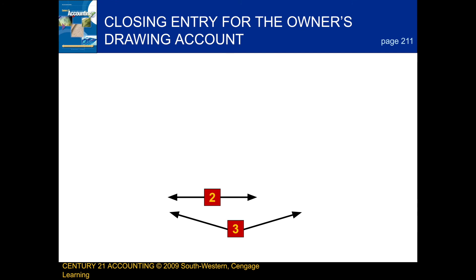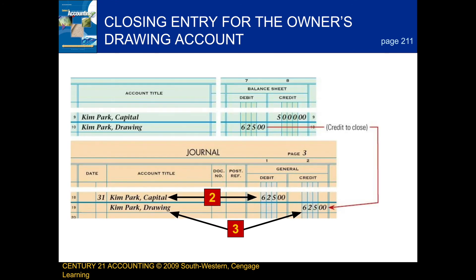The last thing we're going to be talking about in this lesson is the closing entry for the owner's drawing account. When we record this closing entry, there are a few steps we follow. First, we write the date. Next, we record the debit. And finally, we record the credit.